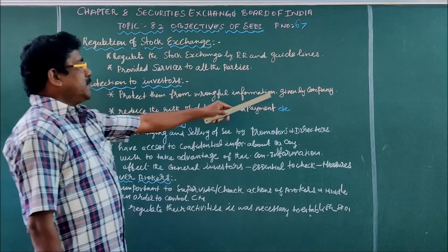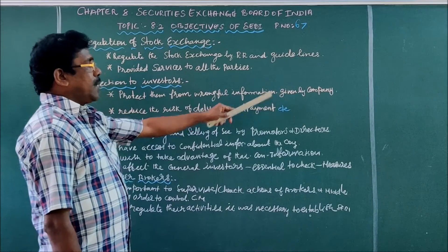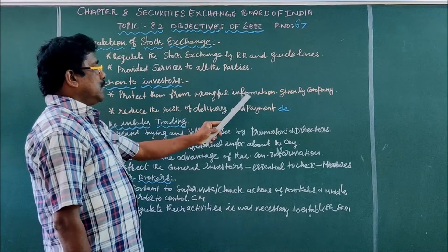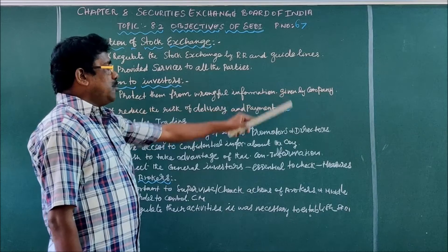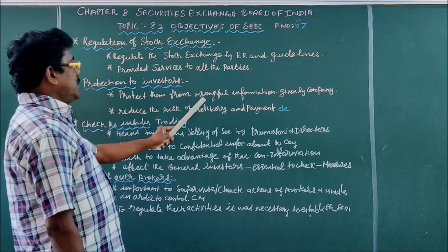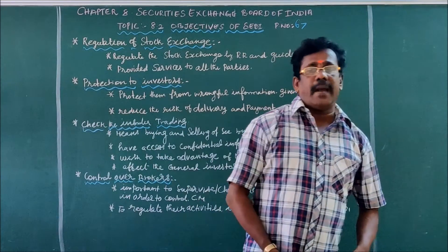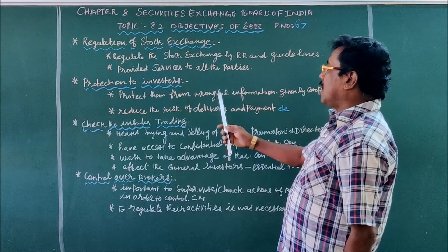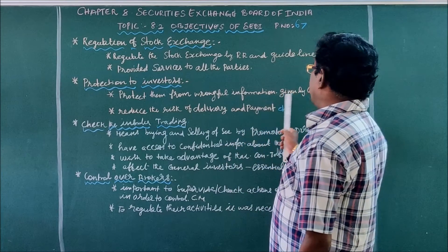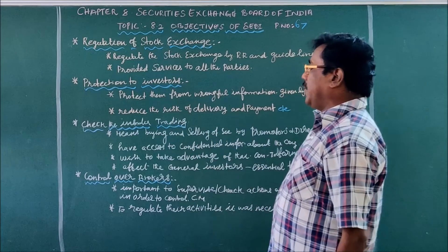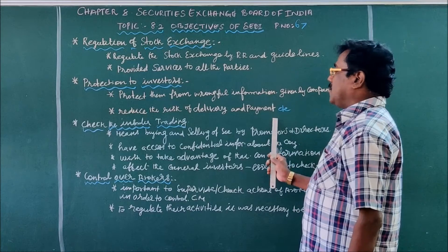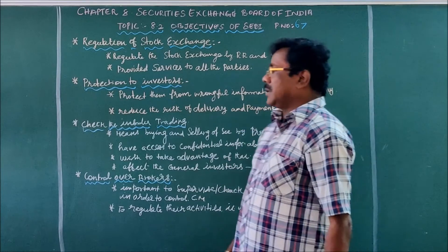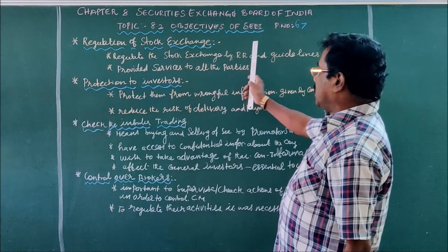Investors view all the information given in the prospectus issued by the company before purchasing securities. If there is any wrongful information, investors cannot identify it on their own. It is the duty of the Securities and Exchange Board of India to identify wrongful information and also reduce the risk in delivery of instruments as well as the payment of securities, so there is no delay in the exchange of instruments and payment of money.